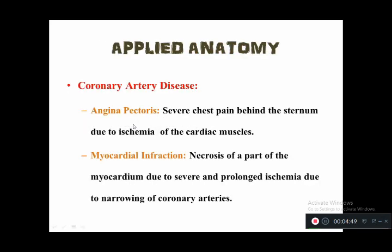Applied anatomy, also called clinical anatomy, tells us about various anomalies or abnormalities related to that part. Any impairment in blood circulation to the heart leads to coronary artery disease, which has two major problems: angina pectoris, defined as severe chest pain behind the sternum due to ischemia of the cardiac muscles, and myocardial infarction, which is necrosis of part of the myocardium due to severe and prolonged ischemia caused by narrowing of coronary arteries.